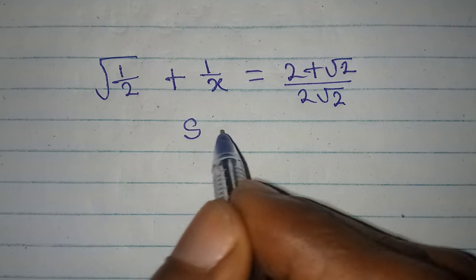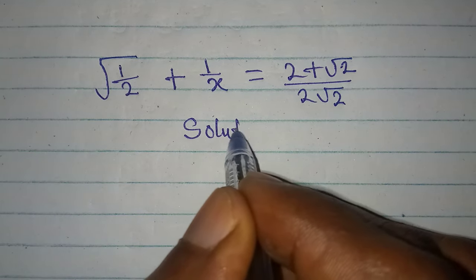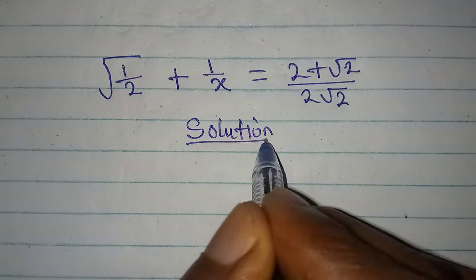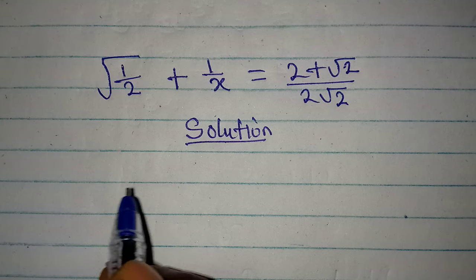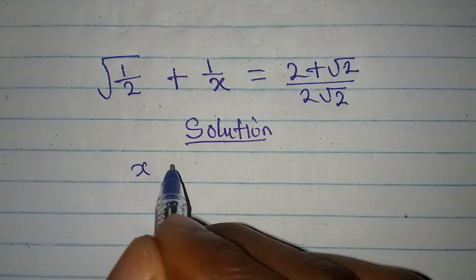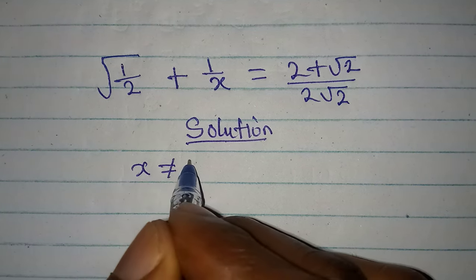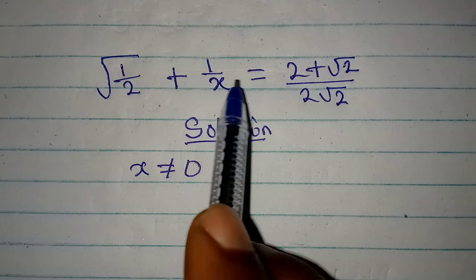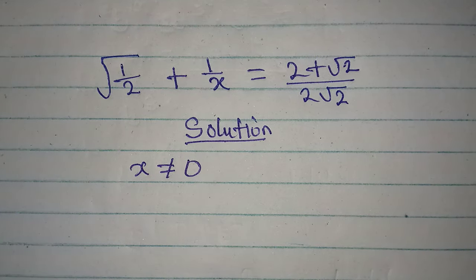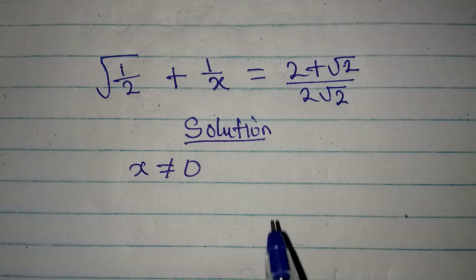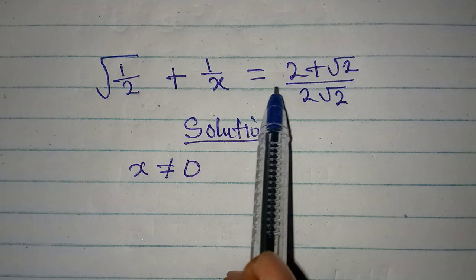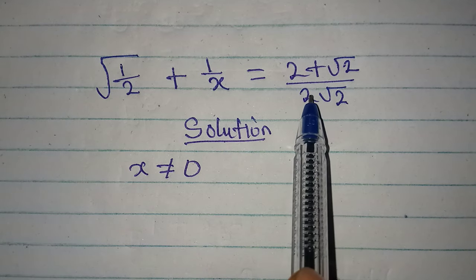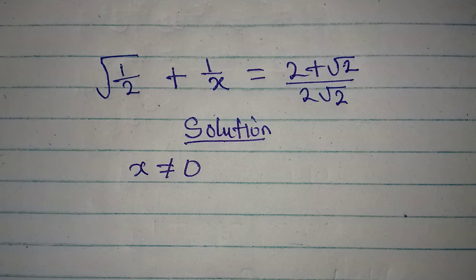Hello everyone, let's provide the solution to this problem very quickly. Note that x must not be equal to zero, because if x equals zero then the whole equation will be undefined. We have the square root of 1 over 2 plus 1 over x, equals 2 plus root 2 over 2 root 2.